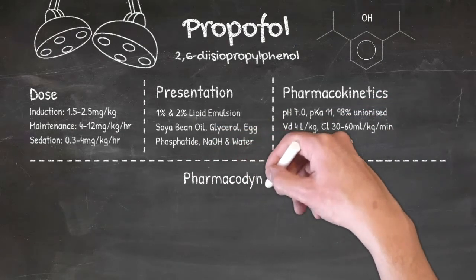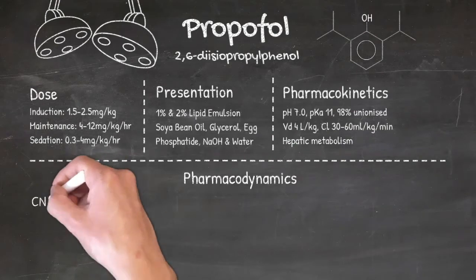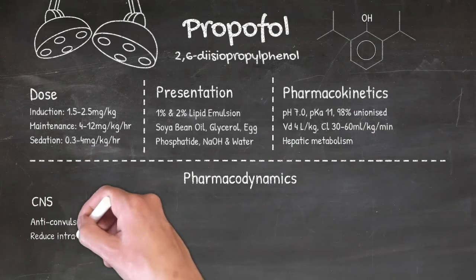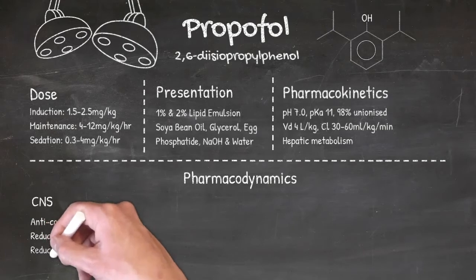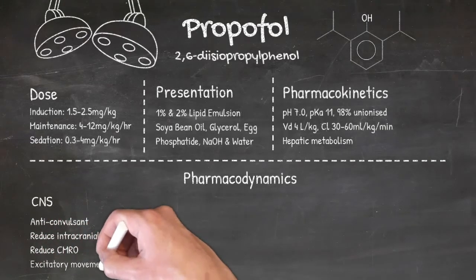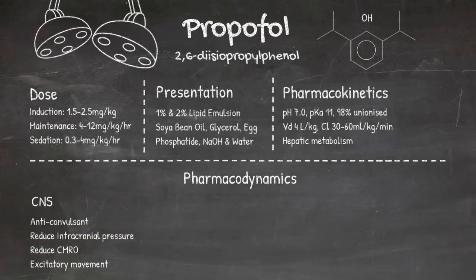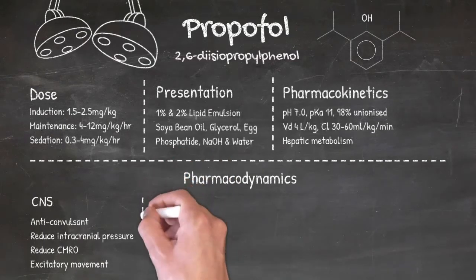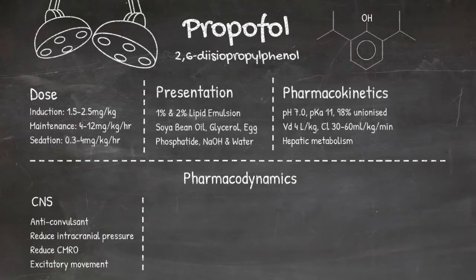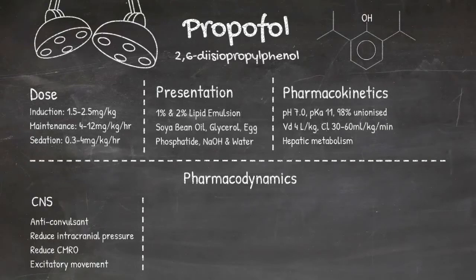Looking at propofol's pharmacodynamic effects on the central nervous system: propofol acts by potentiating GABA receptors, so it can be used as an anticonvulsant. It reduces cerebral blood flow and therefore intracranial pressure, and also reduces the cerebral metabolic rate for oxygen. However, some excitatory movements can be caused by propofol, and in epileptics, emergence from anaesthesia can sometimes result in seizures.